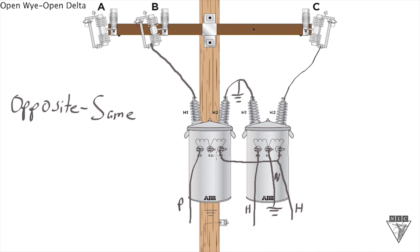So where they get the name same from is, if you look right here, we tied the X1 bushing to the X1 bushing, the same bushings. So that's where the opposite same name comes in. Opposite on the primary side, because the H2 is tied to the H1. Same on the secondary side, because the X1 is tied to the X1.